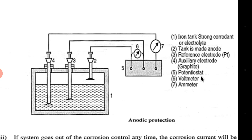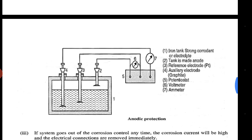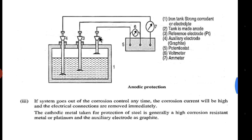This device is called a potentiostat. The role of the potentiostat is to maintain the potential of the tank at the particular passive voltage. A voltmeter and ammeter are also applied — the voltmeter and ammeter tell you the voltage and current, and specifically the corrosion current.